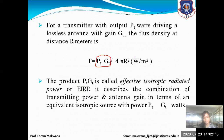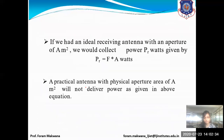Another term — the product of Pt and Gt — is called EIRP, Effective Isotropic Radiated Power, which describes the combination of transmitting power and the antenna gain. Its unit is watts.